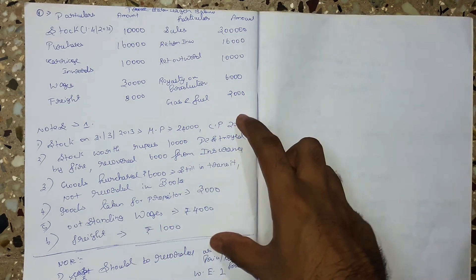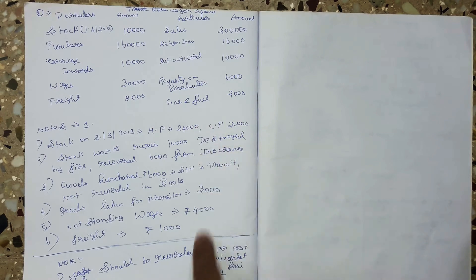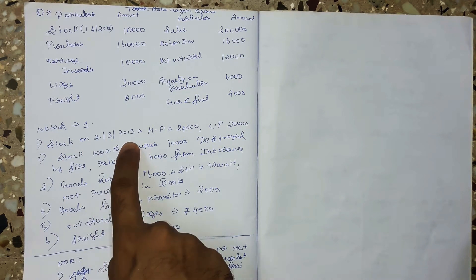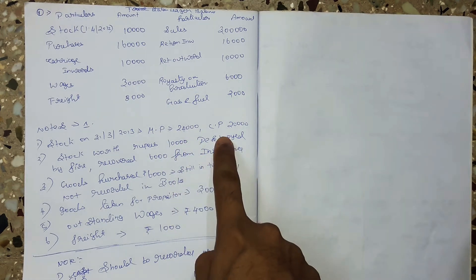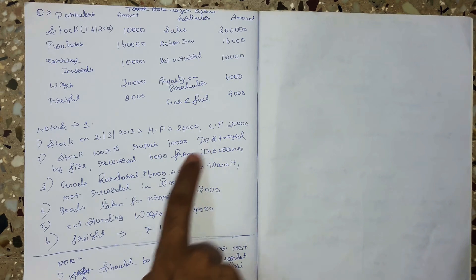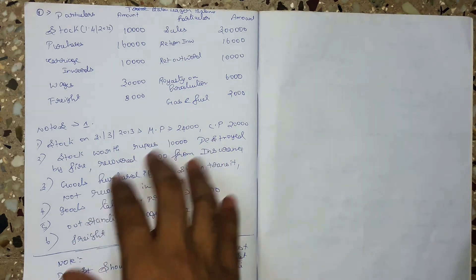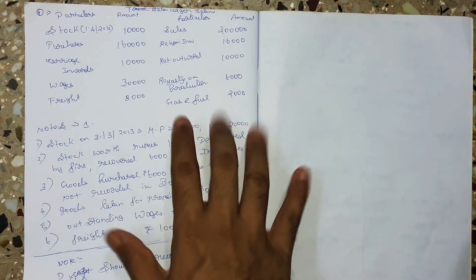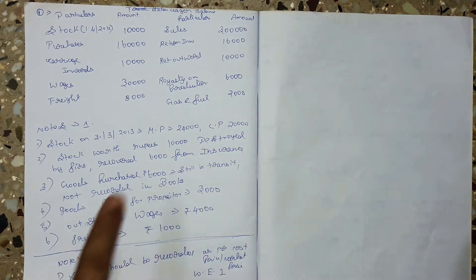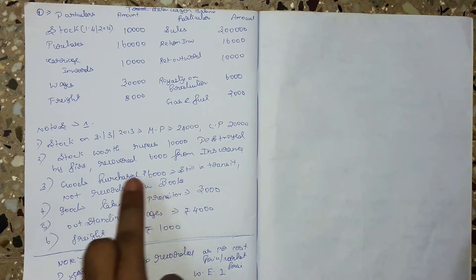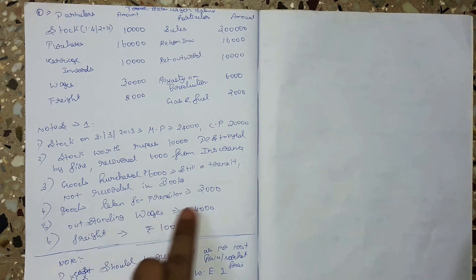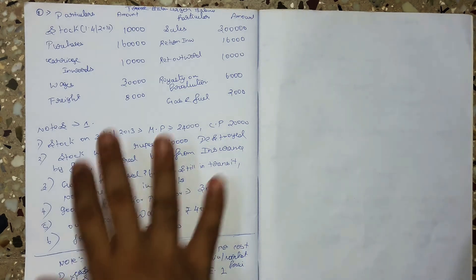Now you will see the notes — that is, the adjustments. The adjustments are not just for the price. The closing stock is 31,000 rupees. The market price is 24,000 and the cost price is 20,000. Goods taken by the proprietor: 3,000 rupees. Goods in transit: 6,000 rupees. Outstanding wages: 4,000 rupees. Prepaid freight: 1,000 rupees.